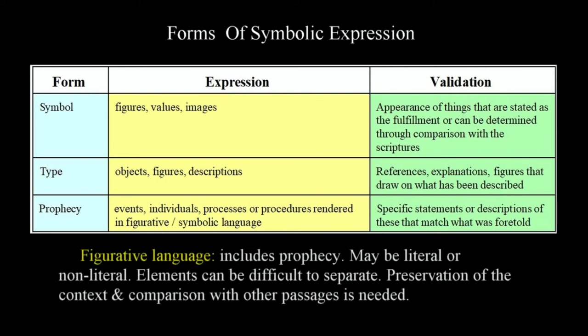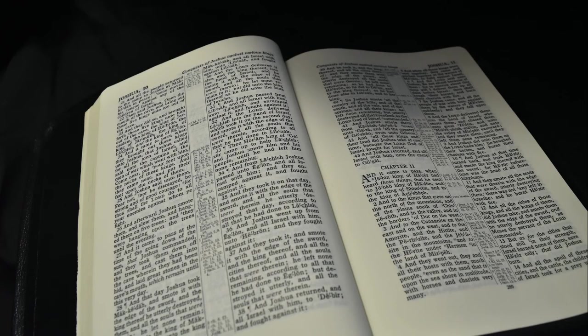Figures and figurative language and prophecy: I've combined these elements as they are frequently seen together. A figure might be an individual, object, event, or process, to name a few ways in which they appear. Figurative language is often made up of non-literal statements that appear in prophecies. Prophecy can be very literal, but is often filled with figurative language that is non-literal and figures that become symbolic for other things. The presence of these elements, particularly when they occur in the same context, can be difficult to separate and interpret. Careful comparison with other passages and preservation of the context will lead us in the right direction as we progress in the following lessons, deepening our ability to appreciate the Bible and understand things at a deeper level.